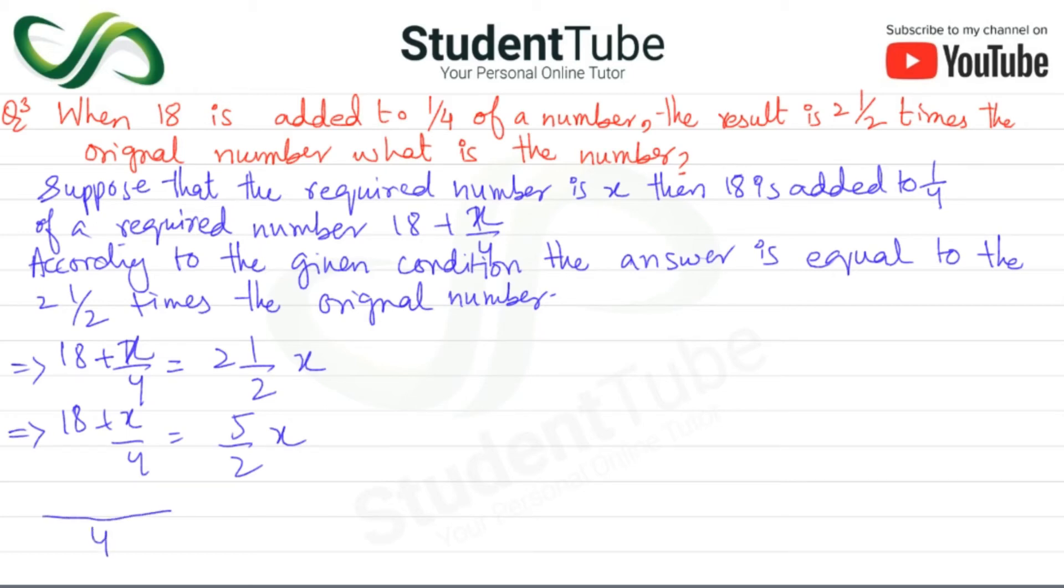Here we will solve this. 18 times 4 will be 72 plus x upon 4.